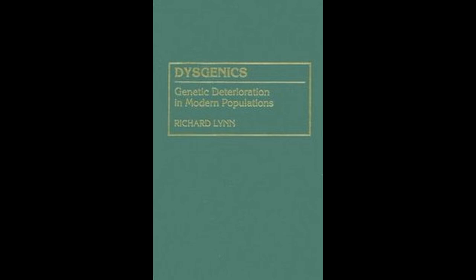Competition between males is generally reinforced by a biologically programmed propensity of females to prefer successful males as mating partners. These principles of natural selection were understood and set out by Darwin in The Descent of Man, where he wrote: "It is certain that amongst all animals there is a struggle between the males for possession of the female." 1871.